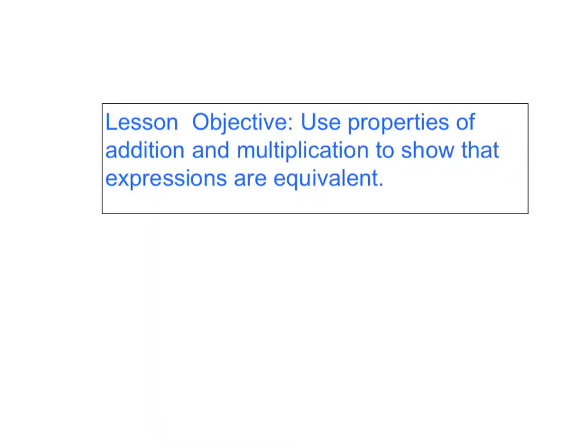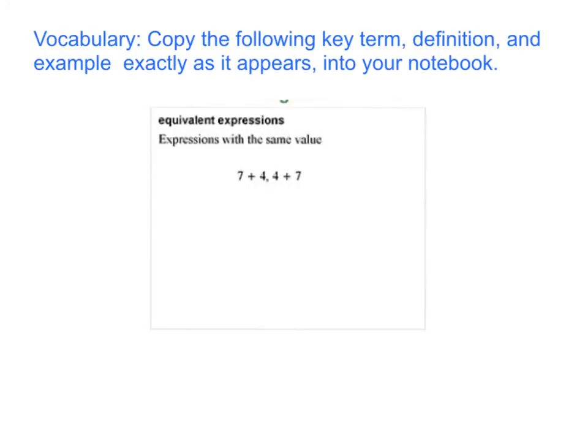Pause again while you write today's lesson objective in your math notebook. Today's objective is to use properties of addition and multiplication to show that expressions are equivalent. Pause while you copy the following key term, definition, and example exactly as it appears into your notebook. Equivalent expressions are expressions that have the same value. For example, 7 plus 4 and 4 plus 7 are equivalent expressions because they both equal 11.